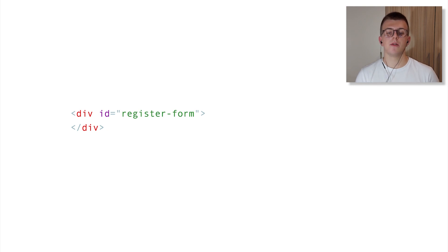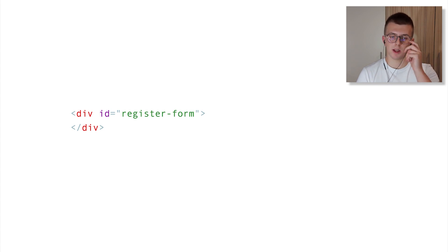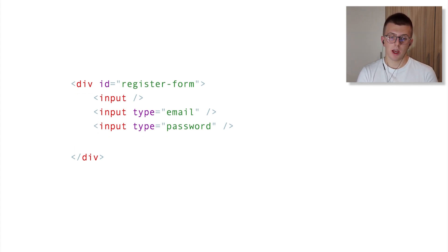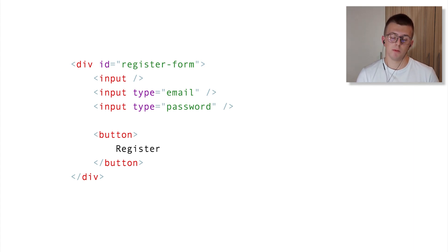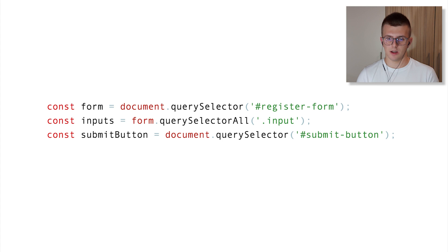To demonstrate, I'll first create an example where we don't use a form element. For example, we're making a registration form. On submit, we should create a request to some backend API. We'll start with a div grouping element with an ID — three inputs for name, email, and password — and a button used as a submit button. Then in JavaScript we'd get all those elements: the form div, the inputs, and the submit button.